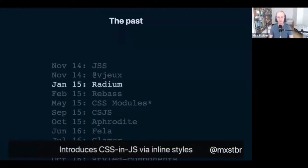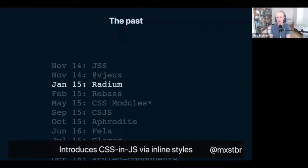In January 2015 we first got Radium, which tried to make CSS-in-JS happen as an open source library by injecting inline styles — attaching a style attribute to your HTML tags and putting all your CSS in there. The downside is that with inline styles you can't do media queries, hover selectors, pseudo elements, or anything more complex than simple styles. We know now that wasn't the best approach, but it was an important step. I'd probably not recommend using Radium nowadays — it's pretty deprecated, though some people still use it.